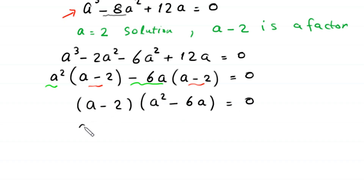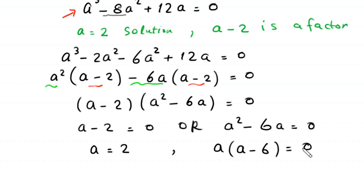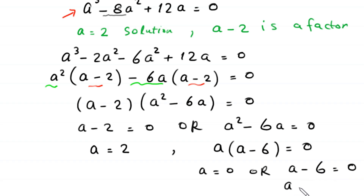From here, either a minus 2 equals 0 or a squared minus 6a equals 0. From the first equation, a equals 2. From the second, factoring out a gives a(a minus 6) equals 0, so either a equals 0 or a equals 6. We have three values of a: 2, 0, and 6.